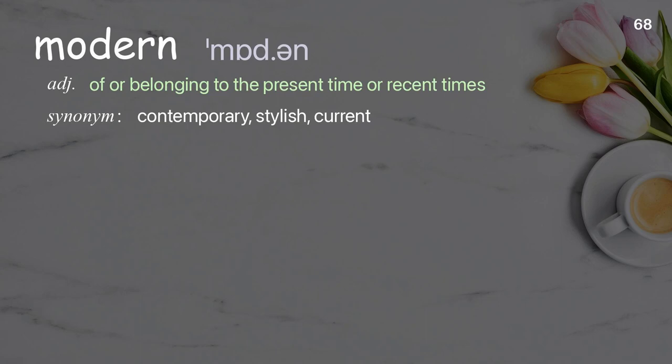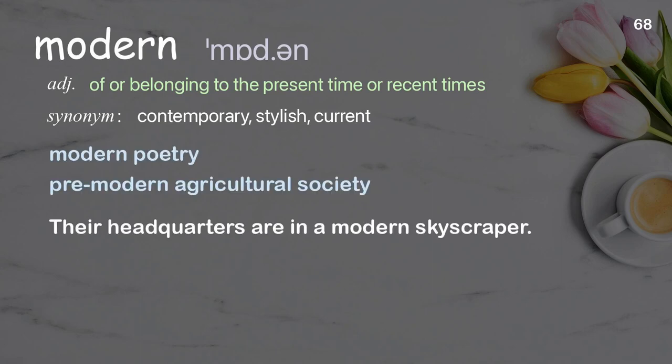Modern: of or belonging to the present time or recent times. Examples: modern poetry, premodern agricultural society. Their headquarters are in a modern skyscraper.